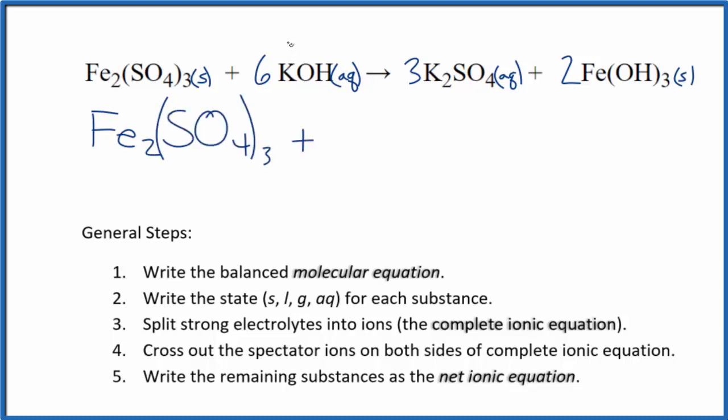Potassium is in group one, so that'll be one plus. And the whole hydroxide ion is one minus. So we have six potassium ions and we have six hydroxide ions. And these are the reactants in our net ionic equation.